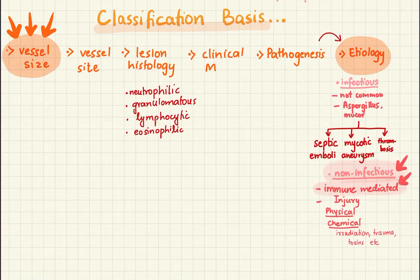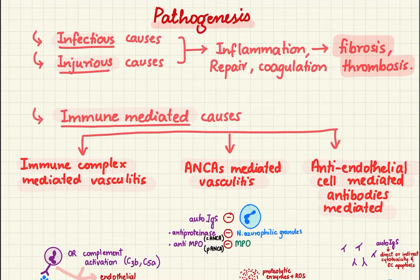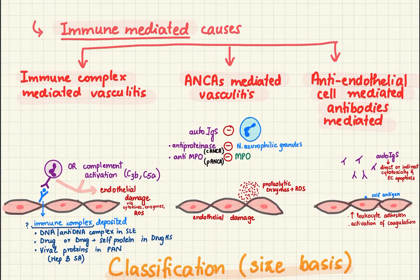Based on etiology, we have infectious and non-infectious causes. Infectious causes are Aspergillus and Mucor, most commonly leading to septic emboli, mycotic aneurysms, and thrombosis. Non-infectious causes can be immune-mediated, which are most common, and due to injury. The pathogenesis due to infectious and injurious causes will be inflammation and repair, and also coagulation, causing fibrosis and thrombosis and thus complications.